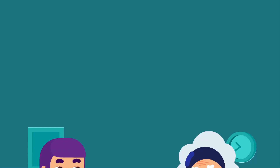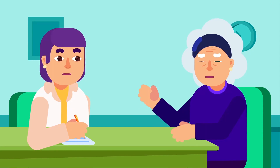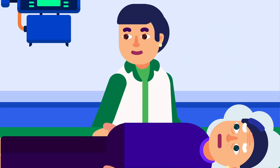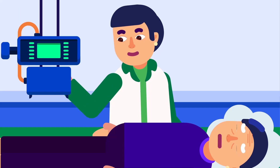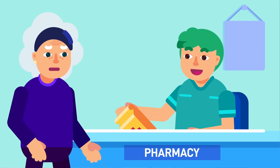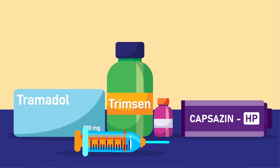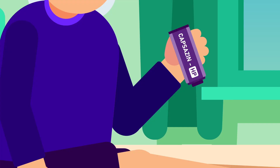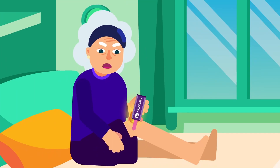Treatments: if you still have pain after trying self-help measures, seek help from a rheumatologist. The rheumatologist would examine you and advise you to go for an imaging test like X-ray or MRI, or take your joint fluid for analysis. If required, a rheumatologist may recommend stronger painkillers, steroid injections into the painful joint, or capsaicin cream. Always follow your rheumatologist's advice for the proper dose and duration of the medicine. A surgery, including joint replacement, may be needed for intolerable pain.